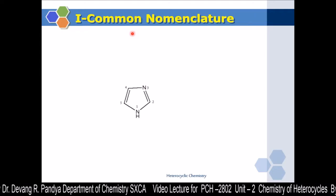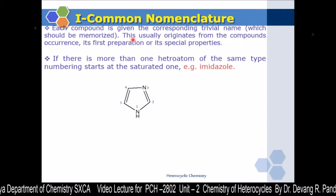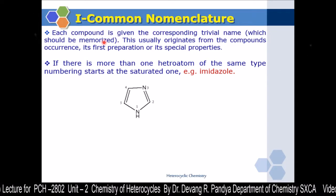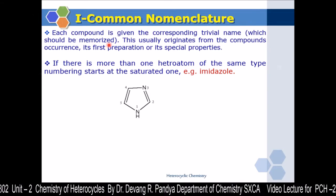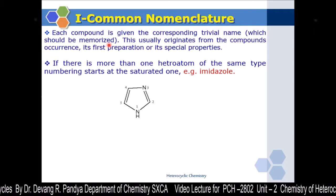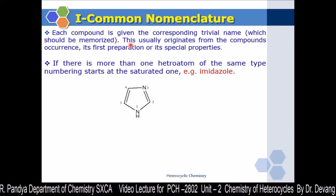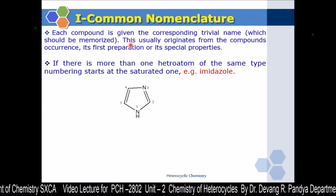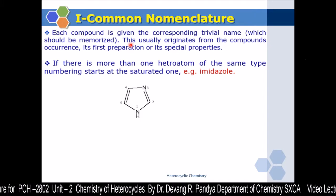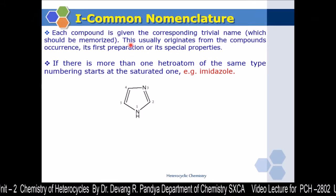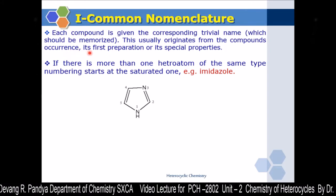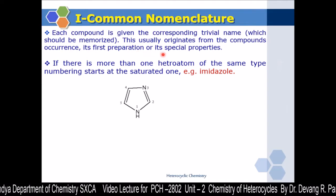Let's begin with the Common Nomenclature System. Each compound is given a corresponding trivial name which should be memorized. There are no rules or regulations for this trivial name. It is inherently accepted from history, based either on the town, the researcher, or the species from which the compound can be obtained. These names usually originate from the compound's occurrence, its first preparation, or its special property.